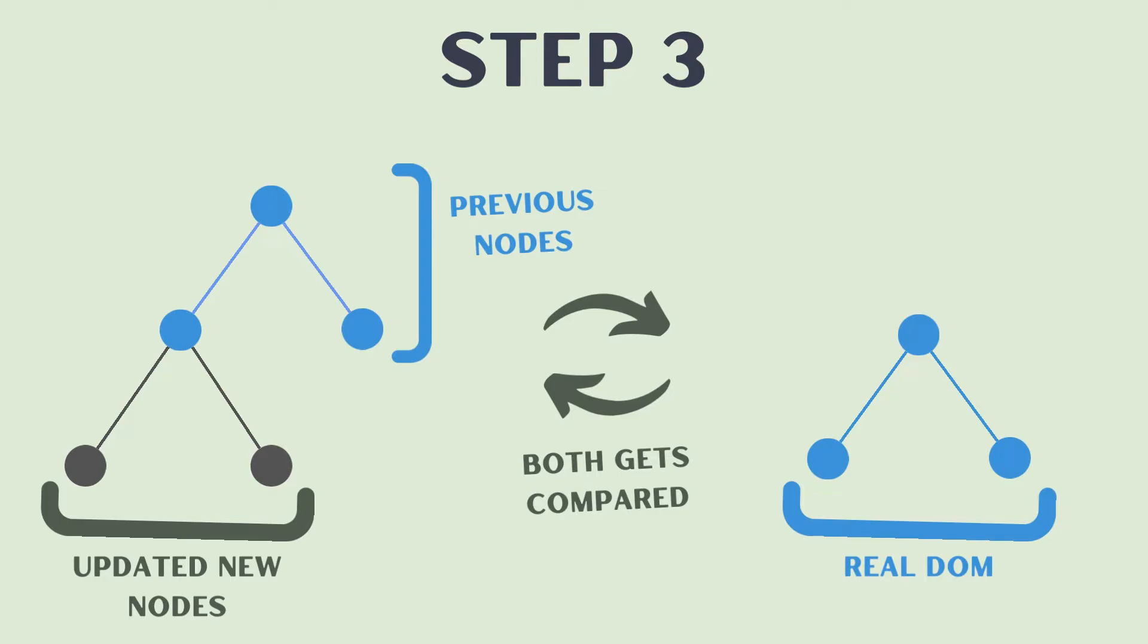Like this, we have the blue nodes, the previous nodes on the left. The left is the entire Virtual DOM and on the right we have the real DOM. So these blue nodes are the data or the UI